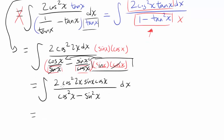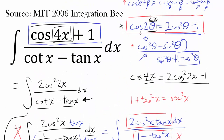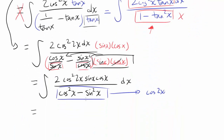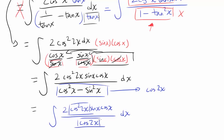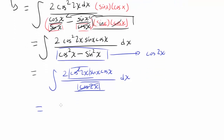Something beautiful is happening. Cosine squared x minus sine squared x is exactly cosine of 2x by the double angle identity. So the denominator becomes cosine of 2x. We now have the integral of 2 cosine squared 2x times sine x times cosine x, divided by cosine of 2x. Since we have two cosine 2x factors in the numerator and one in the denominator, one cancels, leaving the integral of cosine 2x times 2 sine x cosine x.